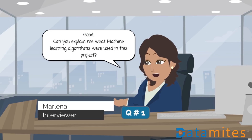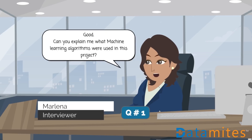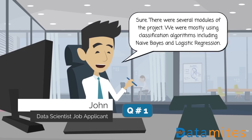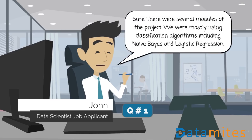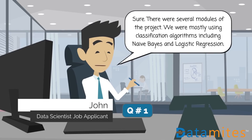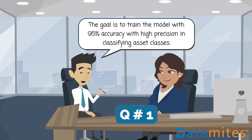Can you explain what machine learning algorithms were used in this project? Sure. There were several modules in the project. We were mostly using classification algorithms, including Naive Bayes and logistic regression. The goal was to train the model with 95% accuracy with high precision in classifying asset classes.